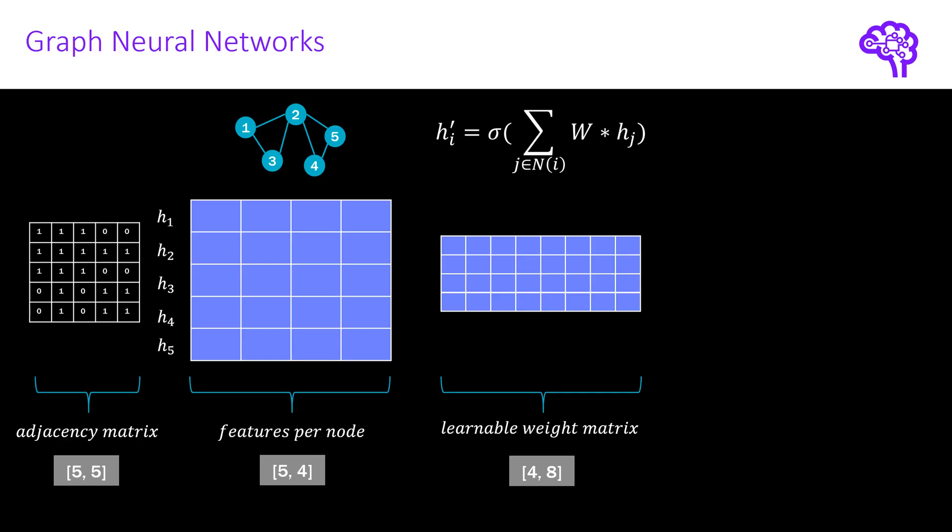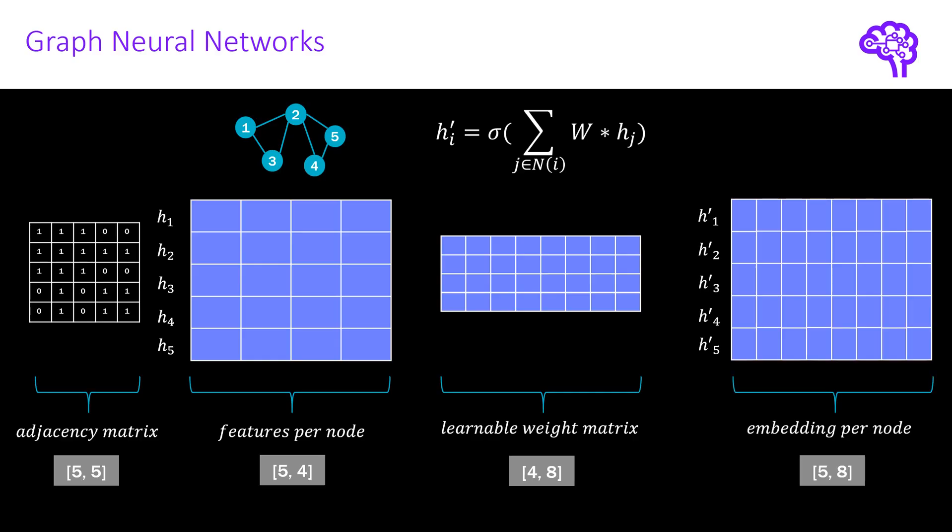So this basic overview shows how the first layer of our graph neural network could look like. The outputs are the updated node embeddings. So here we have 5 nodes with a size of 8. These nodes contain the information of their neighbors and the information of their own node features. I called them H' here.